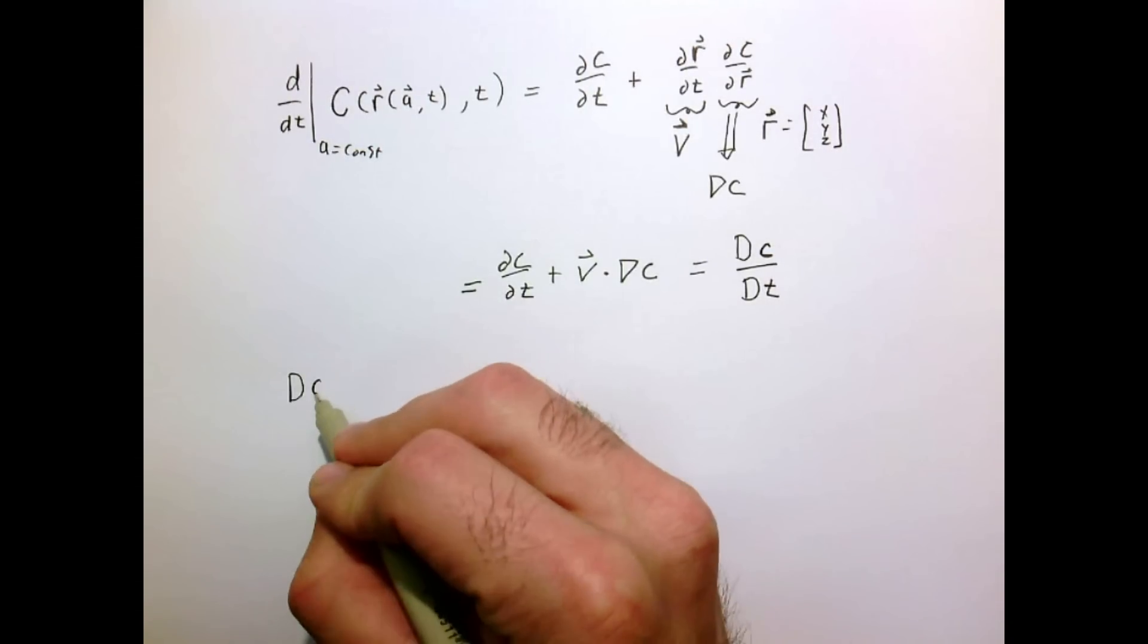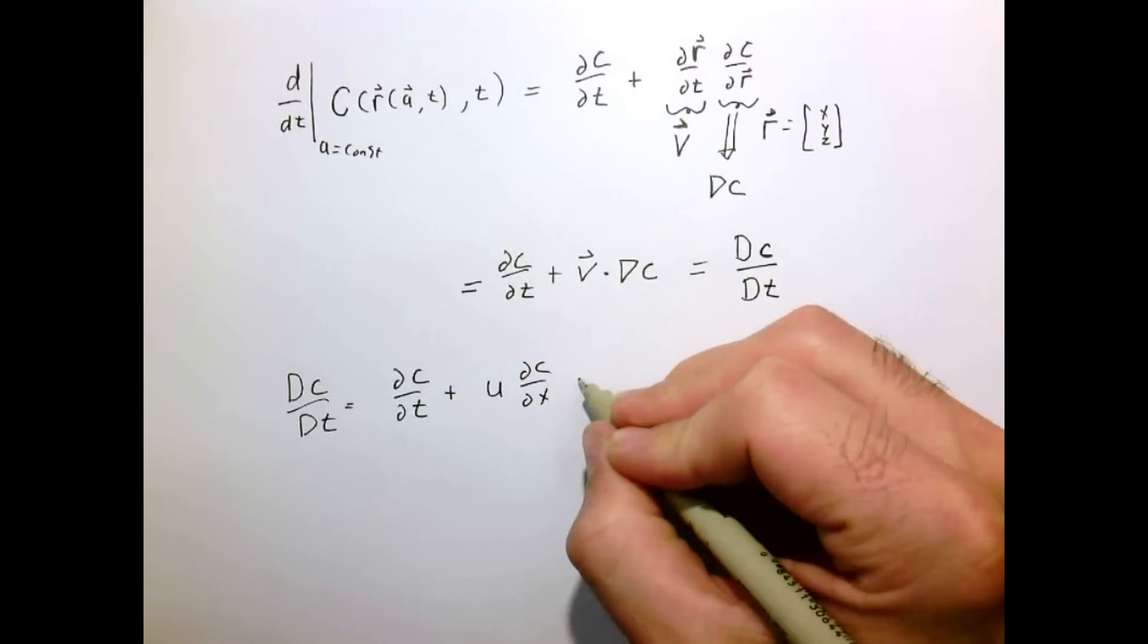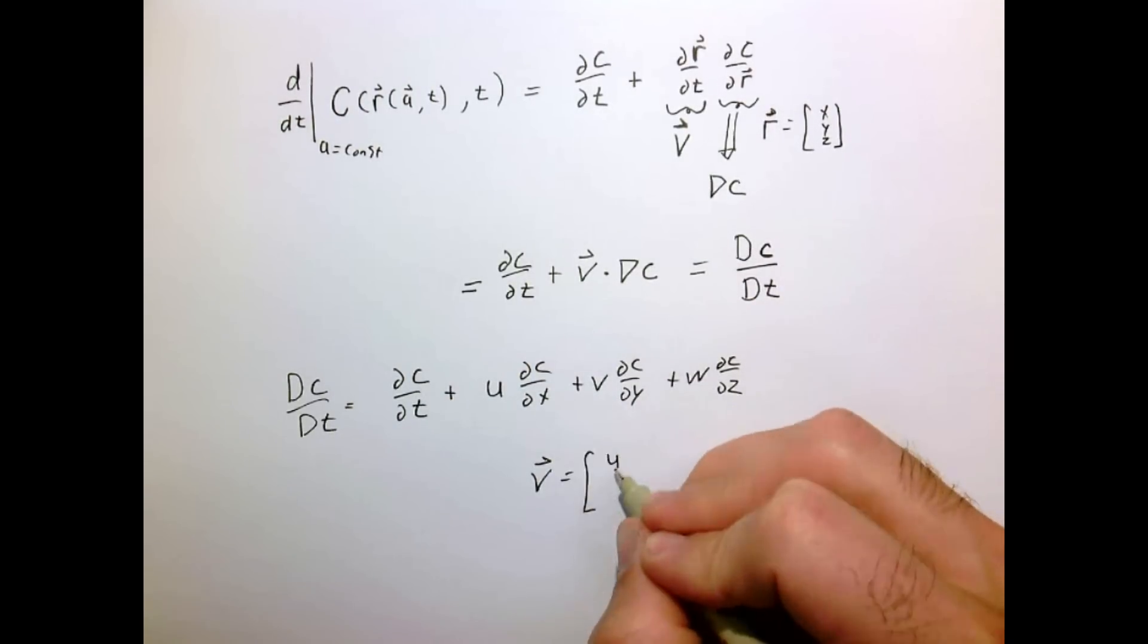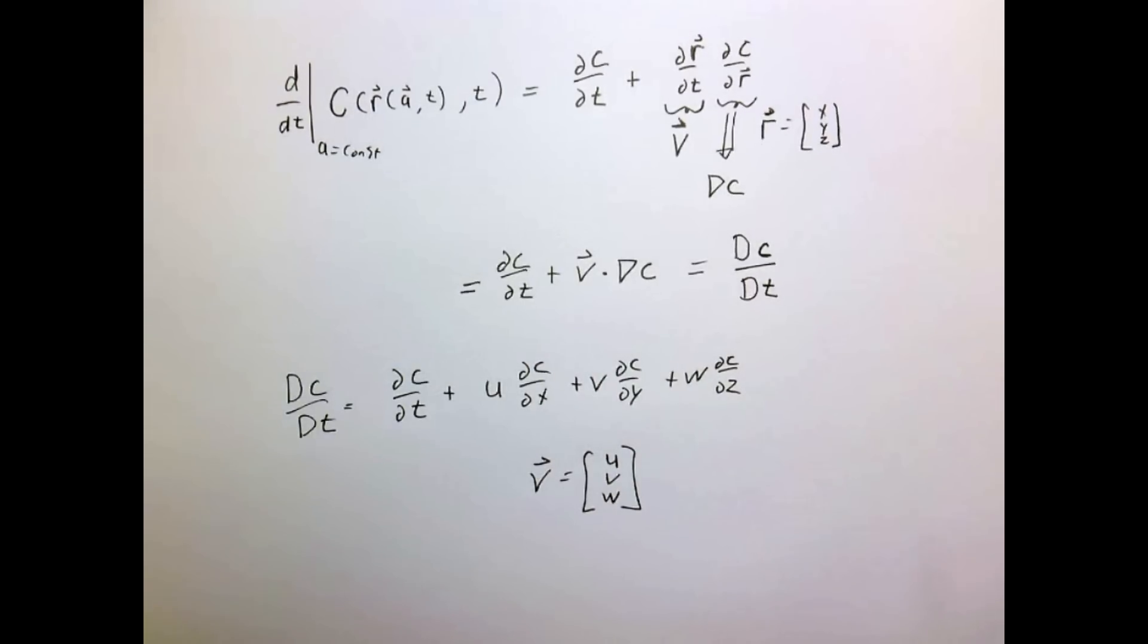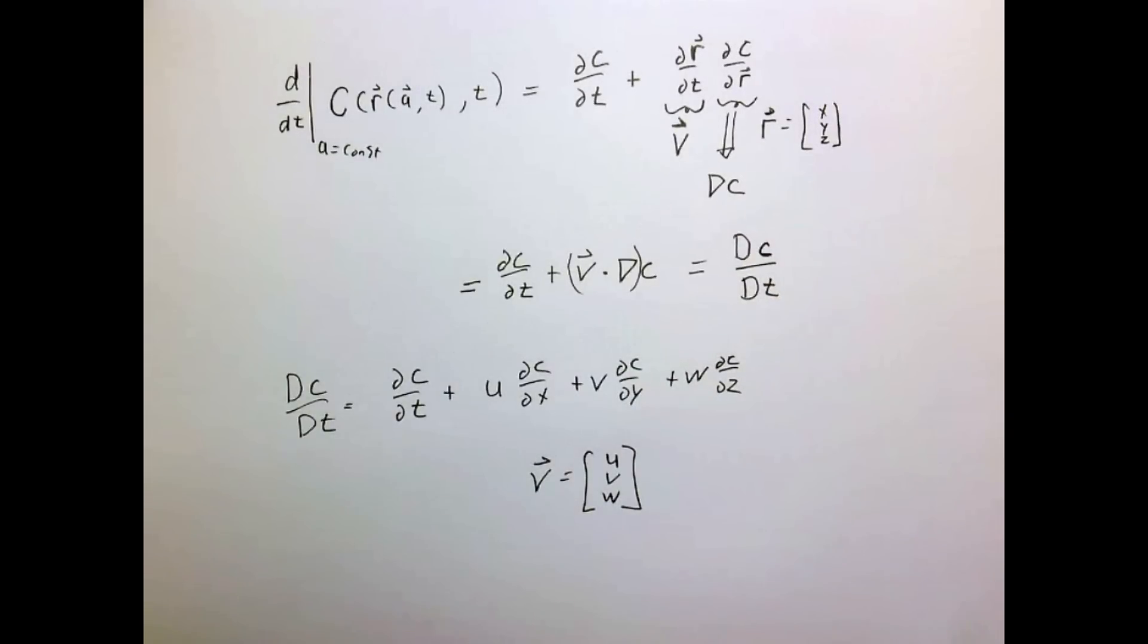Writing this thing out in component form. So writing this out in component form where our velocity vector has components u, v, w, we have a term that looks like this. If you ever get confused, sometimes it's nice to put parentheses around that because then you see you have an operator v dot gradient, which is u, v, w dotted with the gradient operator partial x, partial y, partial z.